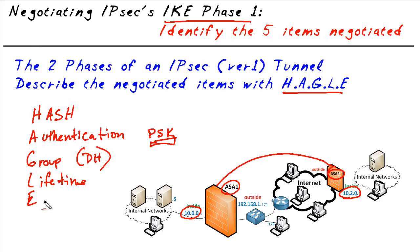And finally we have the E, which is for encryption. What type of encryption algorithm do we want to use? Do we want to use AES, Triple DES, or some flavor of AES like AES-256?